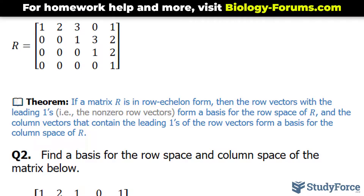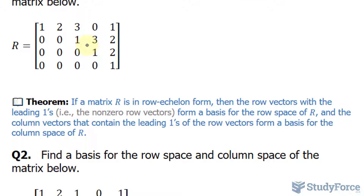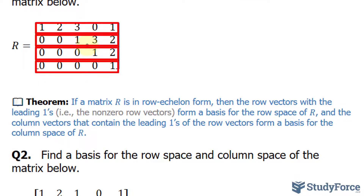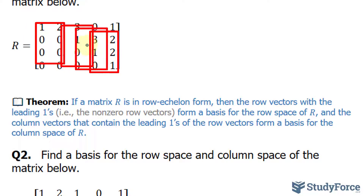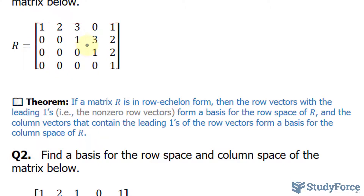If a matrix — let's say R — is in row echelon form, as you can see ours is already in row echelon form, then the row vectors with the leading ones form a basis for the row space of R. And the column vectors that contain the leading ones of the row vectors form a basis for the column space of that matrix.